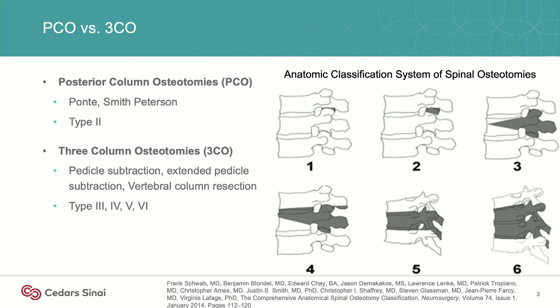First off, just to make sure we're all talking about the same thing. By posterior column osteotomies, I mean Ponti osteotomies, I mean Smith-Peterson osteotomies, I mean type two osteotomies — we're not talking about type one inferior facetectomies by the Schwab classification.